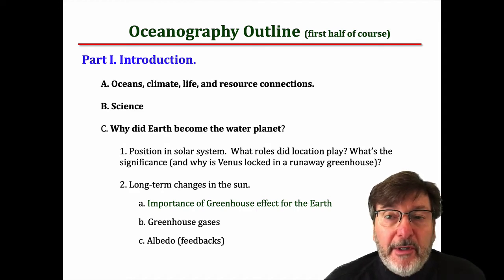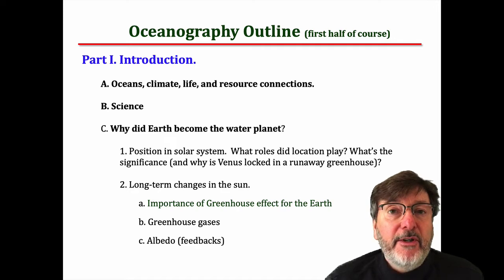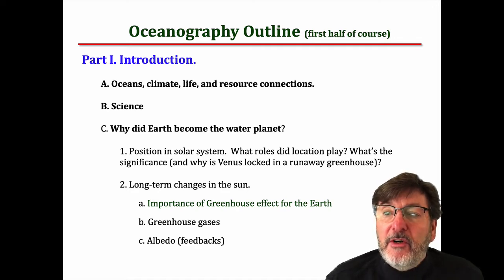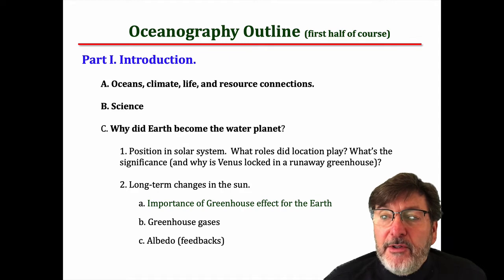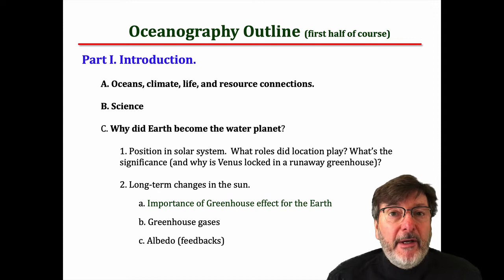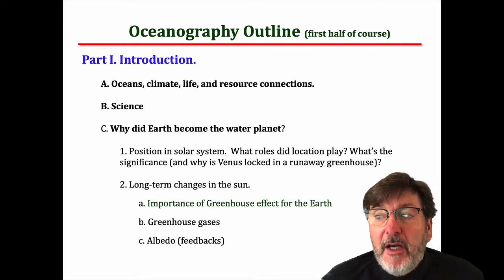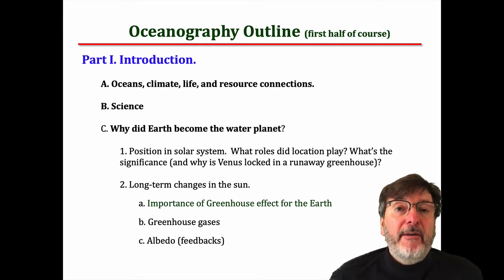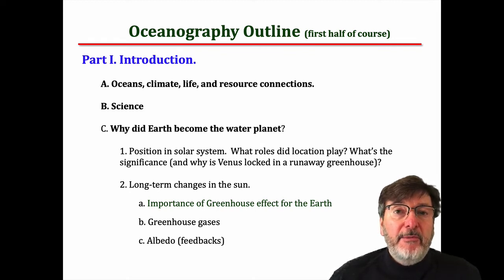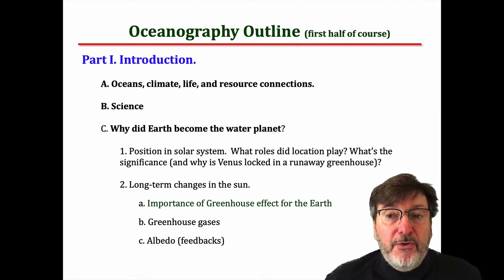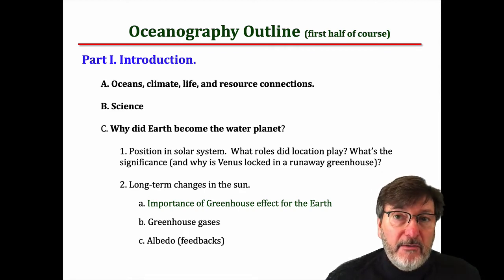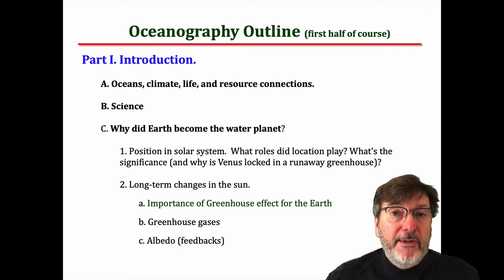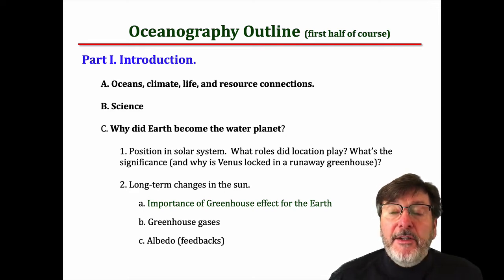Science is very different than a belief system — it's a way of looking at the world. We did a section on how the earth has evolved and became the water planet, how the oceans got here basically, and that starts with the position in the solar system and the role that the evolution of the Sun and solar system have played with the oceans and atmosphere here on Earth. I pointed out that the early Sun was about 15% dimmer and it's gaining in luminosity through time.